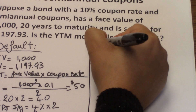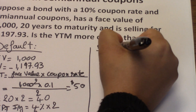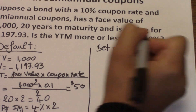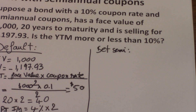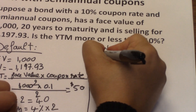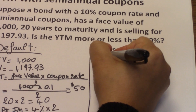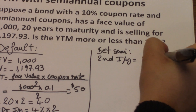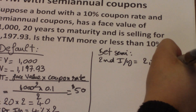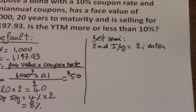You can also set the calculator to semi-annual mode. If you set it to semi-annual, you will get an I/Y that is already an annual number. To set the calculator to semi-annual, press 2nd I/Y, input 2, then hit Enter. That is the difference between the two methods.